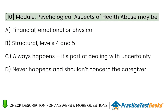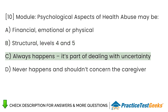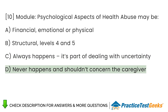Module: Psychological Aspects of Health. Abuse may be: A. Financial, emotional, or physical. B. Structural, levels 4 and 5. C. Always happens — it's part of dealing with uncertainty. D. Never happens and shouldn't concern the caregiver.